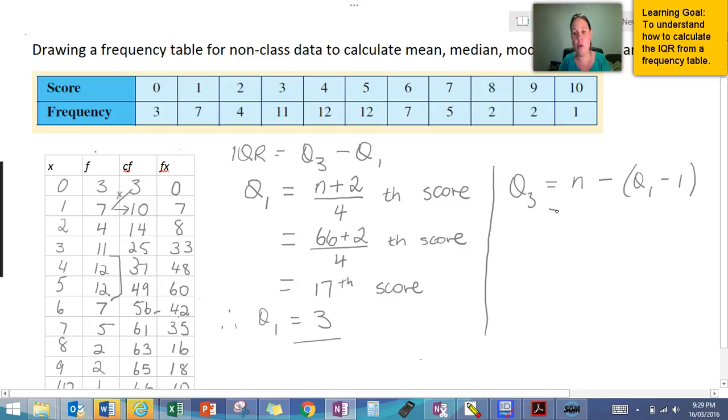Now the reason that we minus 1 off is because we actually want to land on the score that we need, not to go past it. So it's the same as counting back, so 66 minus 16 means that we are looking for the 50th score.